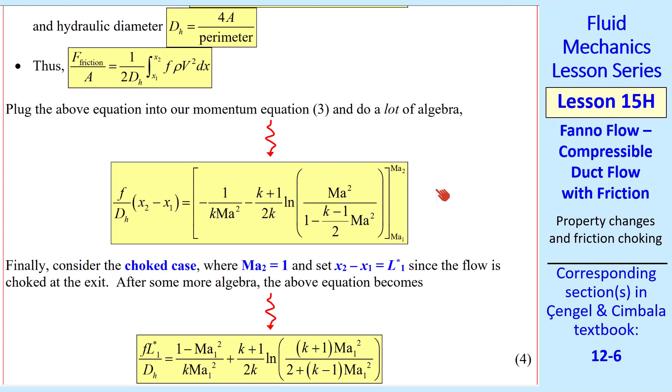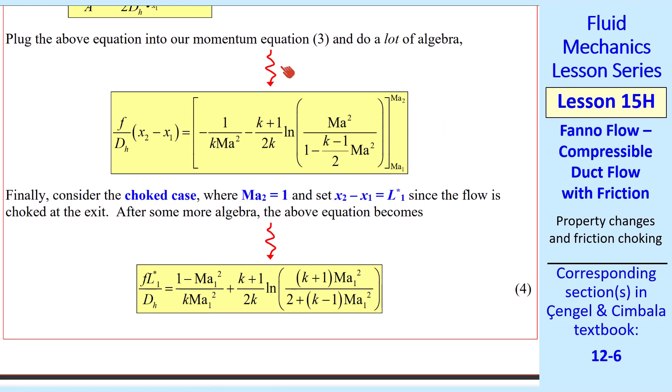We have an equation for F, namely the Churchill equation, which is given here in terms of hydraulic diameter, since the duct does not have to be round. Plugging all these in, we get this integral for F friction over A. Now we plug all these into equation 3, our momentum equation, and do a lot of algebra to end up with this equation. This is valid for any location X2 when we have given initial location X1, and we evaluate this from MA1 to MA2 from our integration. But let's consider the choked case, where Mach number 2 is 1, and we'll let X2 minus X1 be L star 1, star again indicating choked flow at the exit. After a little more algebra, this equation reduces to this, which we'll call equation 4. L star 1 is the critical length from X1 to the location where the flow becomes sonic. In other words, how long the duct has to be to choke the flow. So this is the equation we get for choked flow.